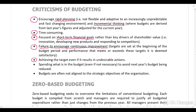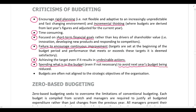Budgets can encourage achieving the target even if it results in undesirable actions — for example, actions that could have a negative impact on people or the environment. Another criticism is spending what is in the budget even if it is not necessary, just to avoid next year's budget being reduced.